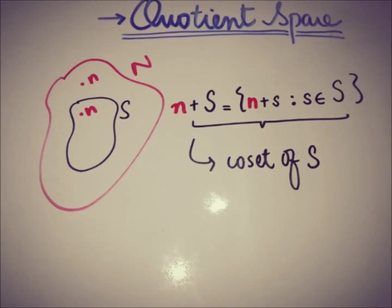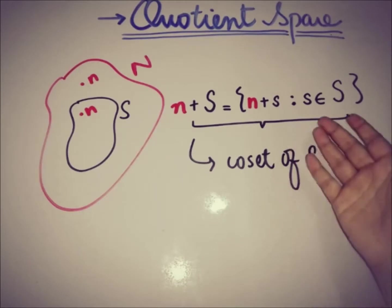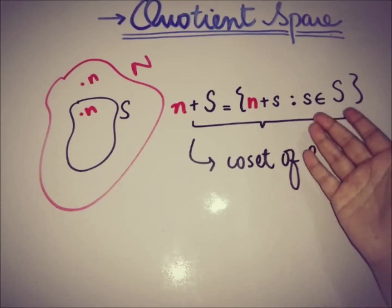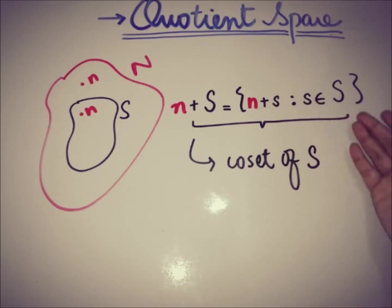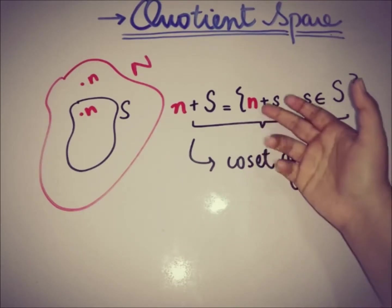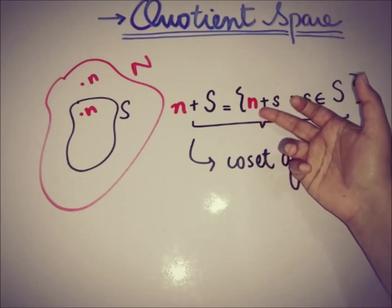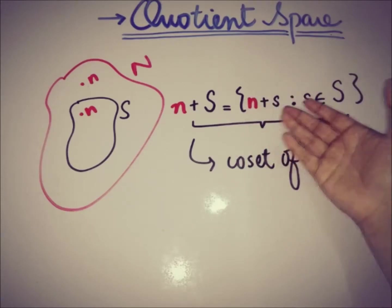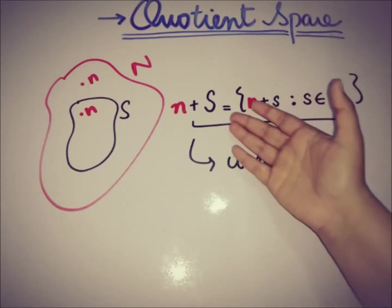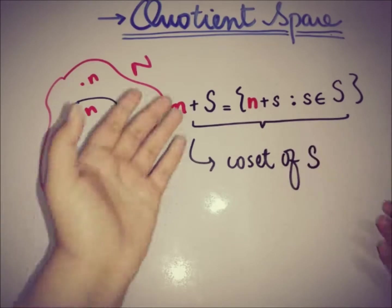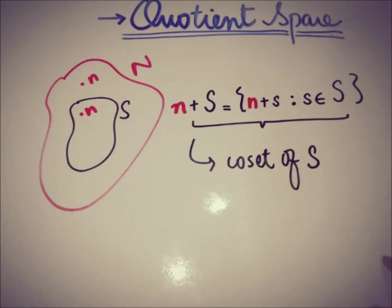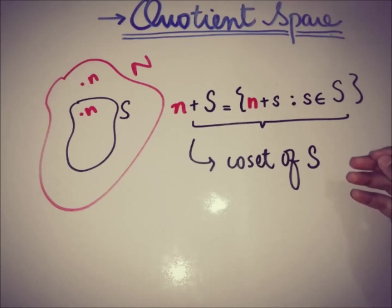We can also say that this is a translate of S by n, because we translate — we add this n to every element of S. So this is called the coset of S.